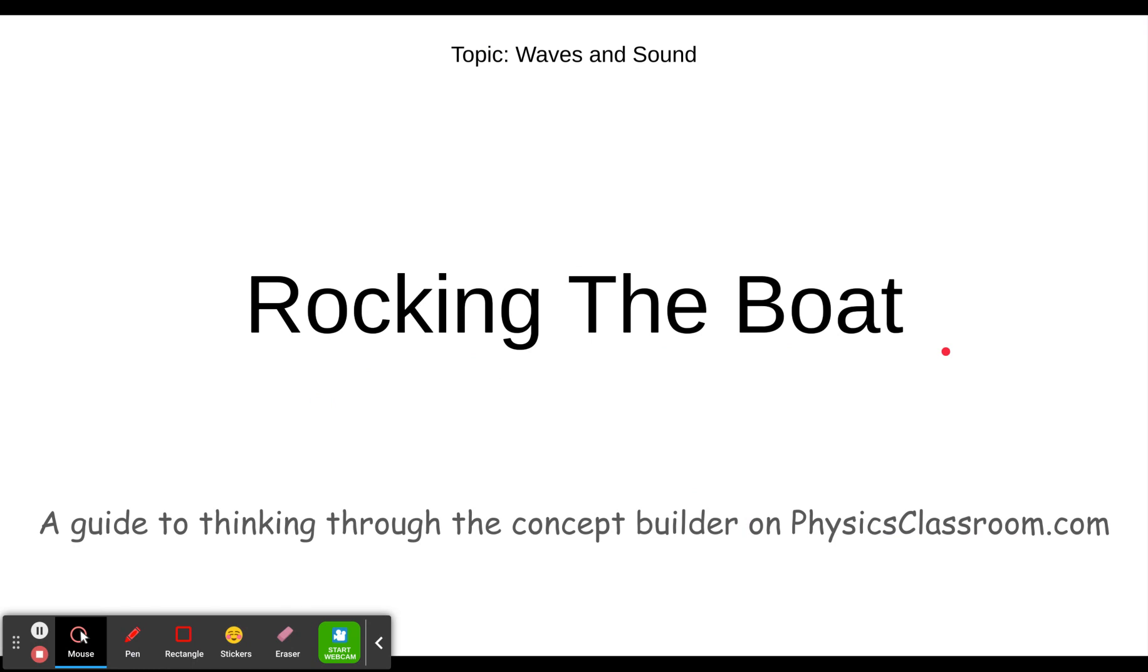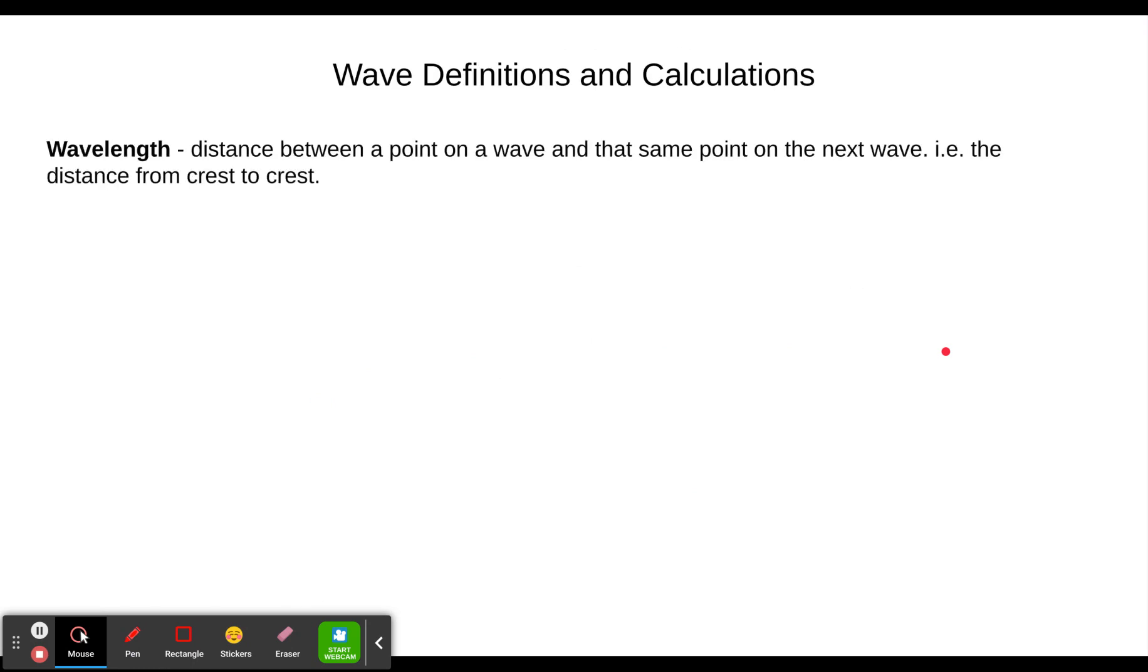The idea of this is to be able to read a description and be able to come up with a picture of what's going on and some numbers to go along with it. Let's start with some definitions here that will help us. First of all, wavelength is the distance between a point on a wave and that same point on the next wave. For this, just think, how far is it from one crest to the next? That'll be measured in meters.